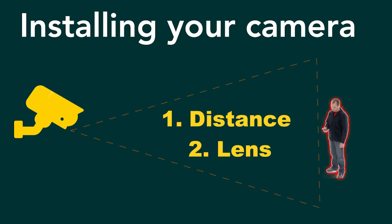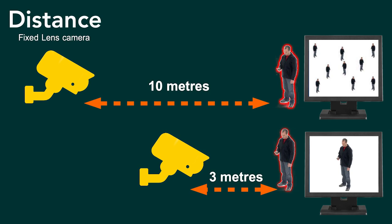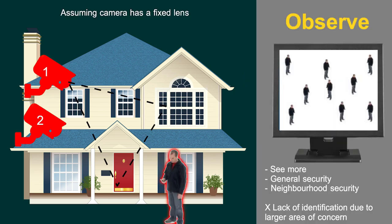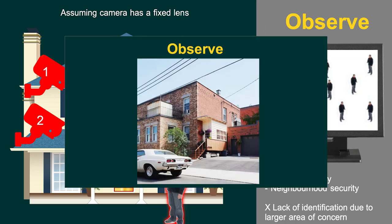When it comes to installing your camera there are two variables: one is the distance from the object of capture, and the second is the lens of the camera. If we look at distance — assuming the camera is a fixed lens camera — it seems quite obvious: the closer we move the camera to the object the more we'll be able to identify them. In order to observe an individual in your front driveway you'd want to move the camera physically further back.